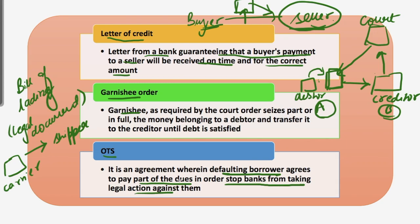OTS is usually done when the borrower cannot repay the loan to the bank and the interest accrued has surpassed the principal amount. The benefit to the borrower is that he is reprieved of all legal proceedings that might have been initiated against him, but it severely affects the retail borrower's credit score.